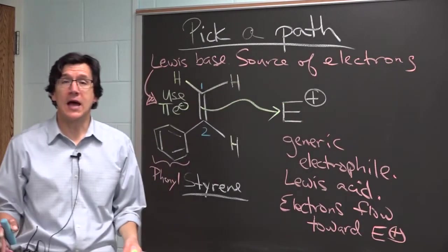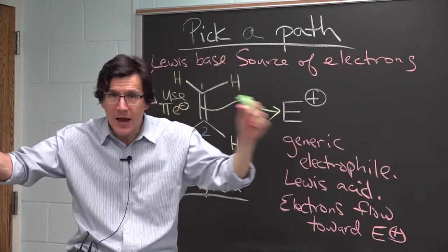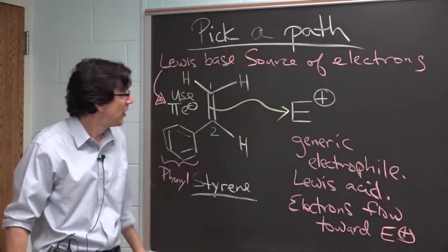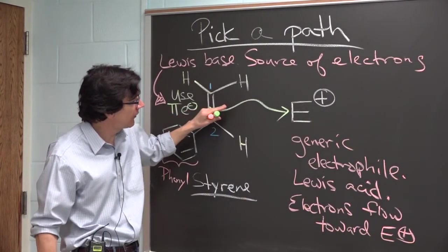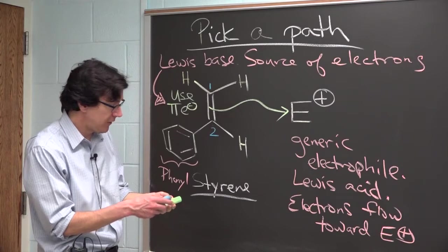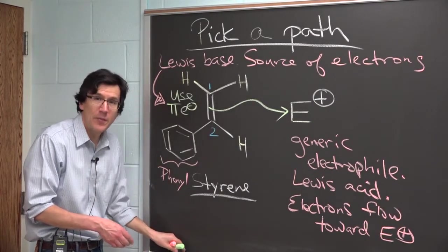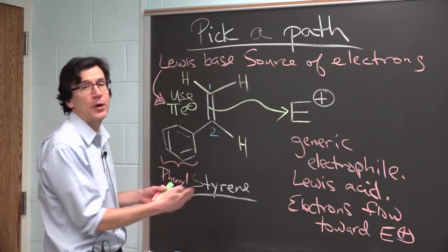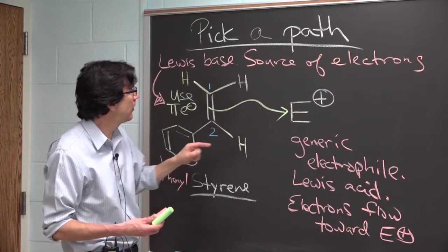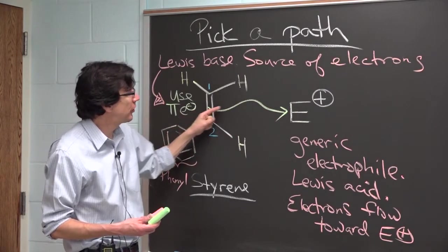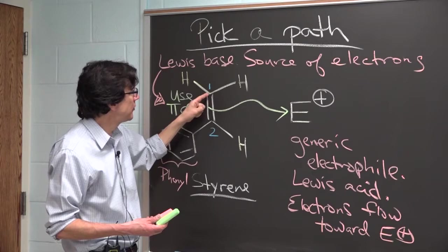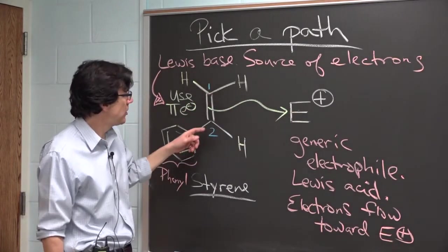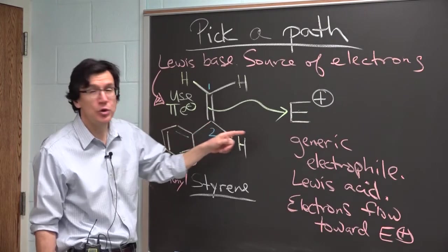In order to pick a path, we want to look down each of the two paths as far as we can until they bend in the undergrowth. We want to analyze what would be the consequences of going along each of these two paths and then pick the better one. Can you draw two separate possible products of this one green arrow? One in which you interpret this green arrow to mean make a bond between carbon 1 and E and a second alternative where you make a bond between carbon 2 and E.